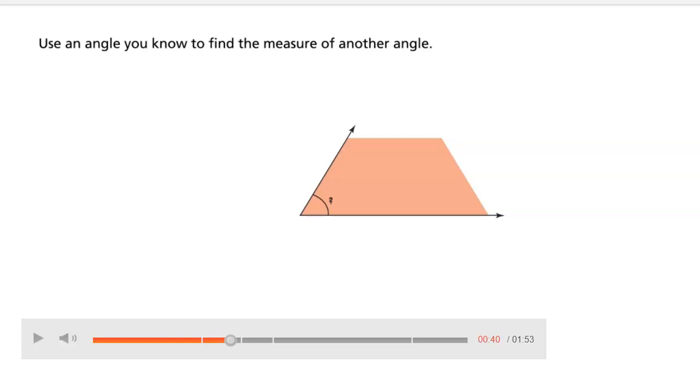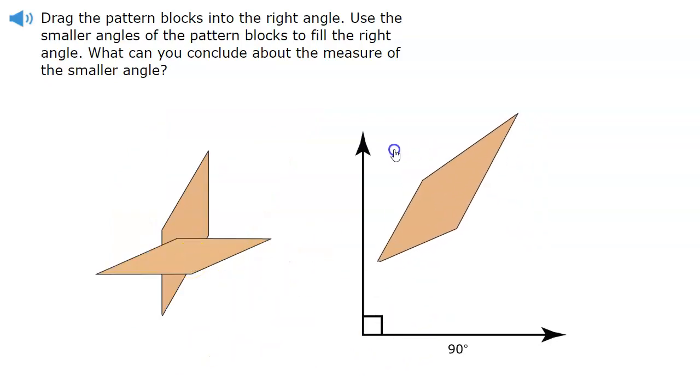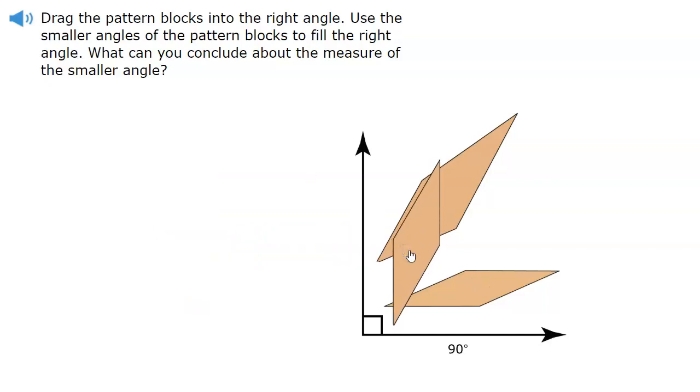Now the problem wants us to use an angle you know to find a measure of another angle. We are going to use some pattern blocks to solve this problem. The video states drag the pattern blocks into the right angle. Use the smaller angles of the pattern blocks to fill the right angle. What can you conclude about the measure of the smaller angle? I would solve this like I would a puzzle.